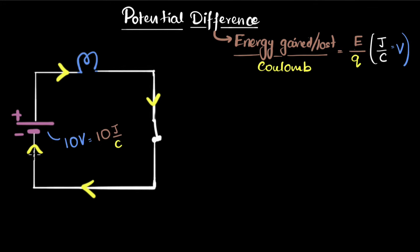So if you have two coulombs going by, it would gain 20 joules of energy and so on and so forth. Now, what happens to that energy that the charges gained? Well, as it goes through the circuit...